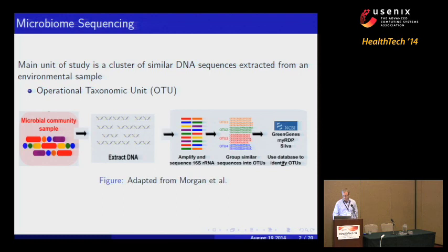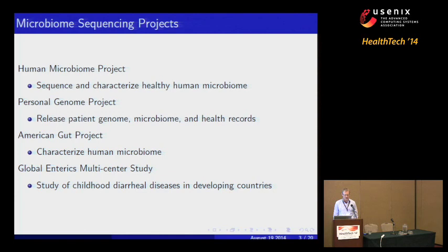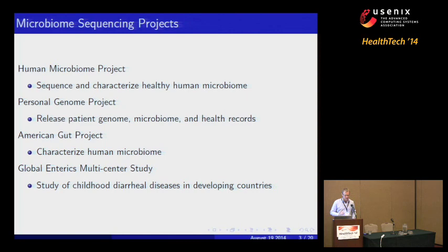Microbiome sequencing is used in a number of ongoing projects. The first is the Human Microbiome Project, similar to the Human Genome Project — its goal is to sequence and characterize the healthy human microbiome and release datasets and tools to enable analysis. The Personal Genome Project aims to release patient genome, microbiome, and health records to enable researchers to correlate genomic and microbiome variants with health outcomes. Third is the American Gut Project, characterizing the human microbiome, and fourth is the Global Enterics Multicenter Study, which studies childhood diarrheal diseases in developing countries.